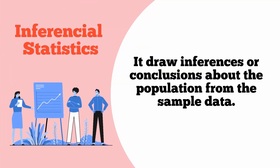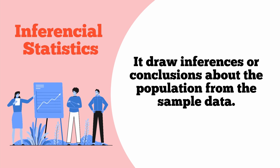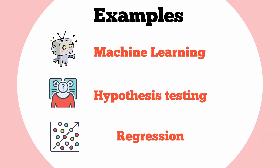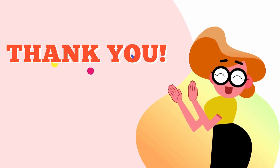The next type is inferential statistics. As the name suggests, this type is used to draw inferences or conclusions about the population from sample data. Inferential statistics is quite opposite to descriptive statistics: descriptive statistics is solely concerned with the properties of observed data and does not assume the data comes from a larger population, while inferential statistics works on the assumption that the sample data is a subset of a larger population. All machine learning models come under this type. Examples include hypothesis testing, probabilities, regression, correlation, and machine learning models.